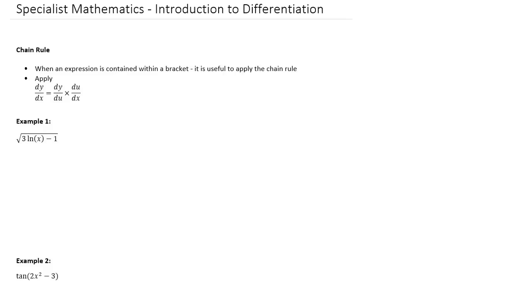So for instance, let's have a look at example one and how we will break this up as a chain rule. Okay, so in example one we can see that this content here could be made u. So what we could do is we could say u is equal to 3 log x minus 1.